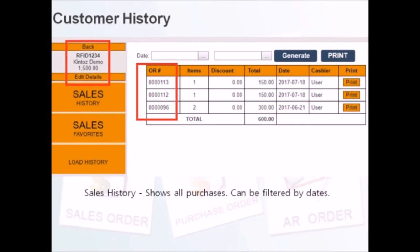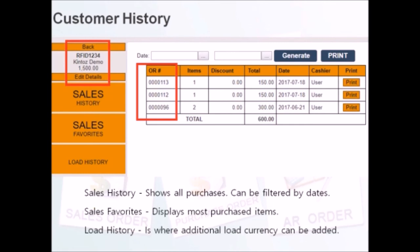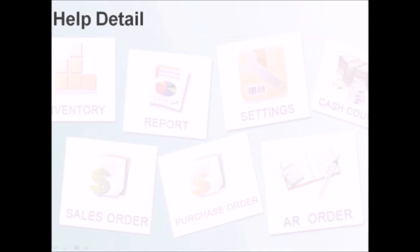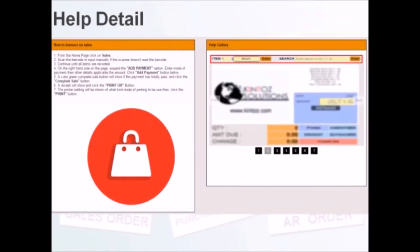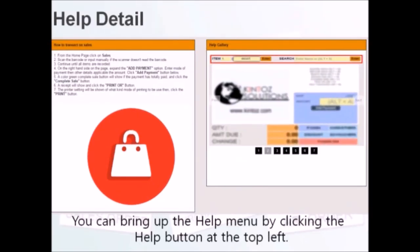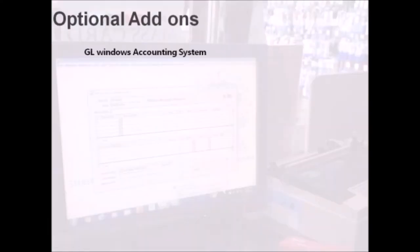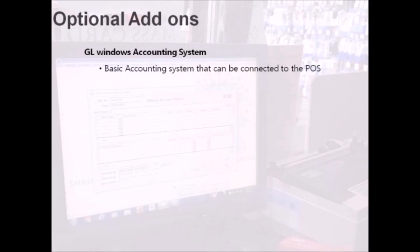We can see the customer's purchases, favorites, and load balance. On the top left bar, simply click on the help button to load the help menu. Finally, some optional add-ons. The GL Windows accounting system can be connected to the POS for generating reports and account receivables to the supplier.